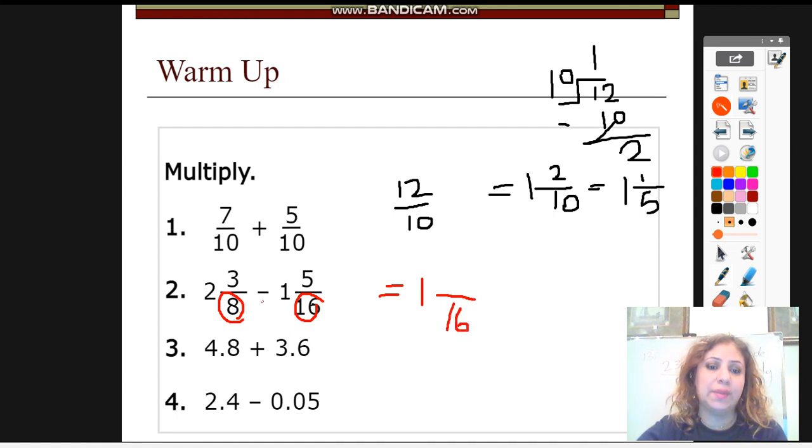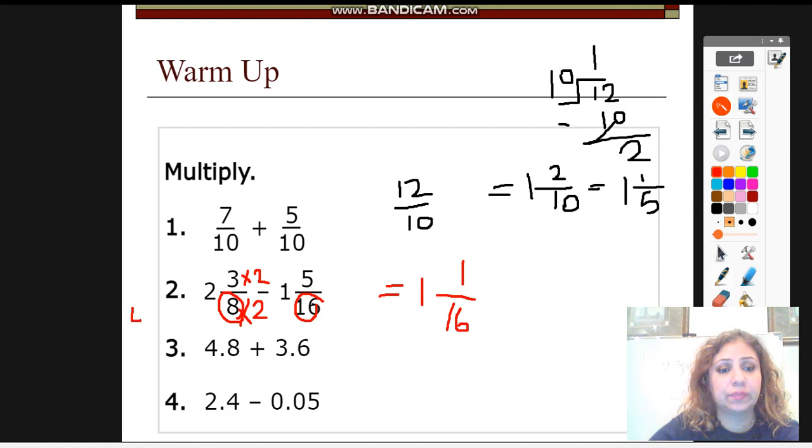How? By multiplying the 8 by 2 here. And of course you have to multiply the 3 by 2. Whatever you do to the denominator you have to do to the numerator. So it's going to be 6 over 16. 6 minus 5, this is 1. So guys remember that you have to get the least common multiple for the denominator, the LCM. By listing the multiples, this way you can get the common denominator.